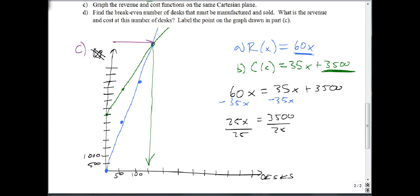So if I make and sell 140 bikes in a month, I'll break even. If I make and sell more than that, I'll make money. If I make and sell less than that, I'll lose money.